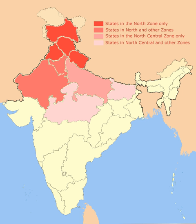The languages that have official status in one or more of the states and union territories located in North India are Hindi, Urdu, Punjabi and English.